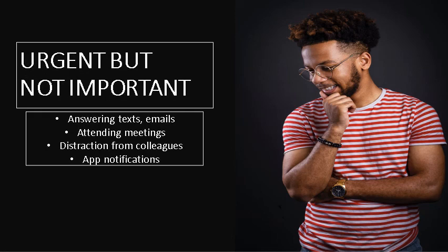Urgent but not important tasks are often not set by you and don't necessarily help you reach those medium to long-term goals of yours. It makes you feel like your daily life is not within your control. Therefore, they are best delegated to someone else or automated by means of a virtual assistant. Some examples include answering texts, routine emails or messages on Facebook, attending association meetings, unwanted distraction from fellow colleagues, and receiving notifications from apps on your phone while studying.